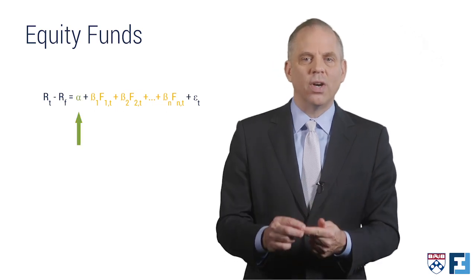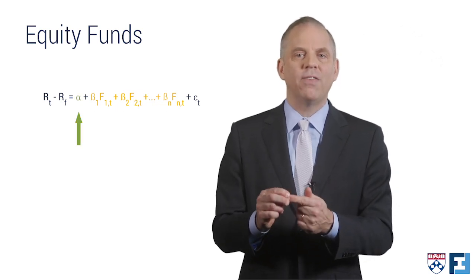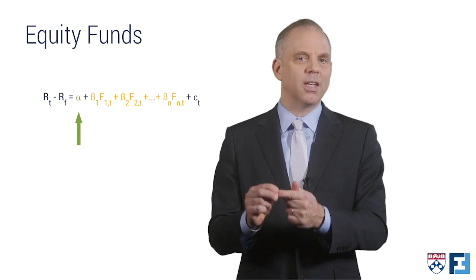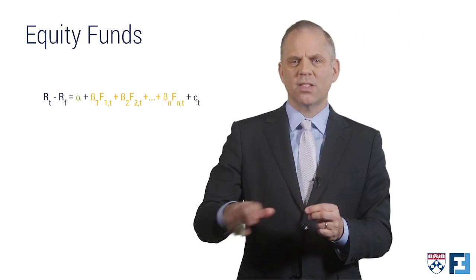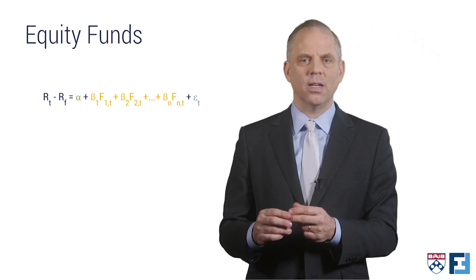Then there's the fund's alpha, which is the per-dollar value added by the fund's management. And finally, there is other risk, which I'm representing with this epsilon here.